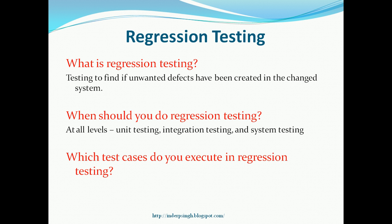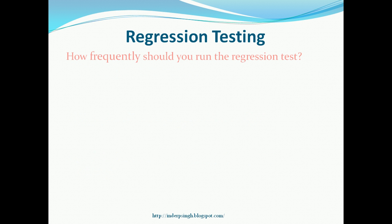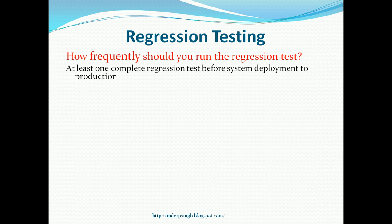Which test cases do you execute in regression testing? Before you select the test cases, you have to find out the impact of changes to the system, because regression is only possible in areas which have changed. First, find out the impact of changes to the system, then select only test cases that cover the impacted components. Time is key and you want the minimum set of test cases that cover all the impacted components. Ideally, regression tests should be done every time there is any system change, but at least one complete regression test should be done before system deployment to production or before handing over the system to the customer.